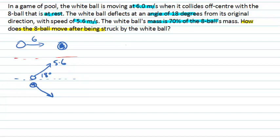So how do we approach this problem? It's a collision problem, so a reasonable thing to consider is: do I expect momentum to be conserved? If I look at just the white ball, as it goes from its initial motion to its final motion, it's clearly changed its velocity, it hasn't changed its mass, and it will have changed its momentum. So the momentum of the white ball will not be conserved, and the same will hold for the 8-ball.